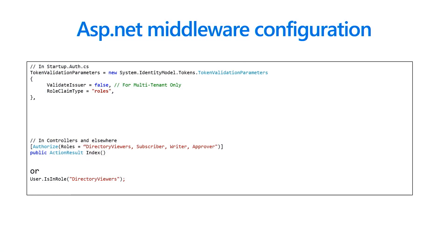If you want to use this in your application, here's an example using ASP.NET. You have to set up the middleware correctly to accept these role claims. Then in your controllers, instead of just using 'authorize', you can specify: I'm going to authorize this controller, but only for the roles 'direct reviewer', 'subscriber', 'writer', or 'approver'. Or you can use a piece of code where you do user.IsInRole.